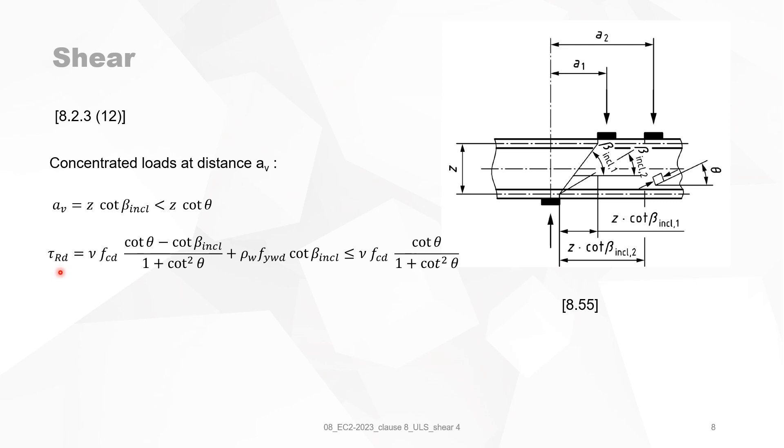The design value of the resisting shear stress is then given by formula 8.55 including the additional capacity because you have a direct transfer of load from the point load to the support. There is also an upper limit to that which is in fact the capacity of the compression field, the maximum capacity of the compression field. But this is a little bit, not complicated, but a little bit annoying to calculate this. So sometimes it is much easier if you use as upper limit, which is the same as what is written here. That cotangent theta must always be smaller than the value given here in this formulation. It makes it much easier than using this.